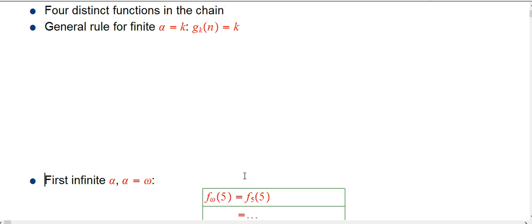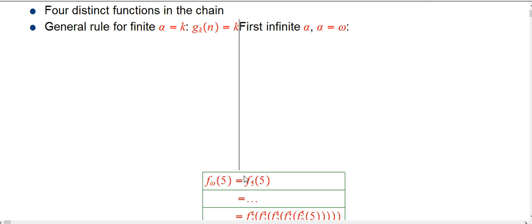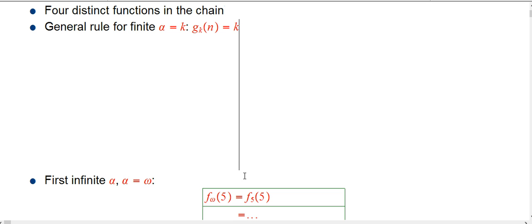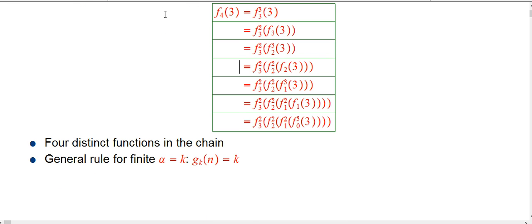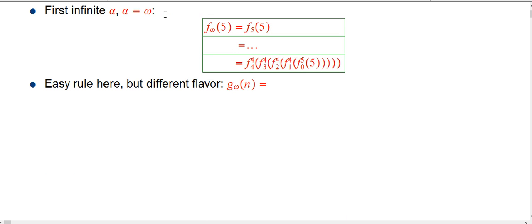So here we're seeing that there are four functions, four distinct functions in the chain. And of course they're all repeated n minus one times. Here that happened to be two. And so it's not an accident that f sub four, the chain is simply just everything below it. The general rule, if α is just a k, just a finite number, then g sub k of n is just k.